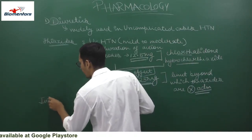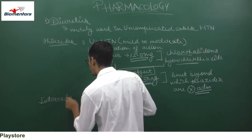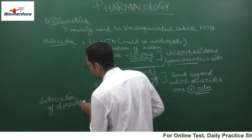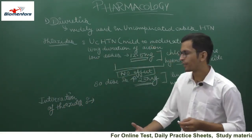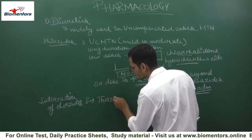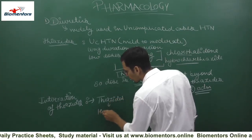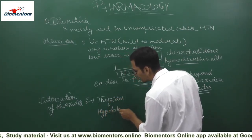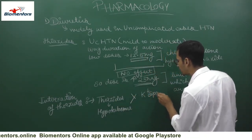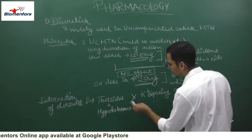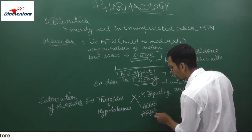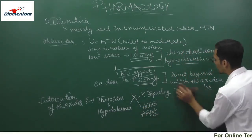Now talking about the interaction of thiazides. As previously discussed in our diuretic topic and in our class on ARBs and ACE inhibitors: thiazides cause hypokalemia. When they interact with potassium-sparing diuretics or ACE inhibitors or ARBs, there is a synergistic effect.